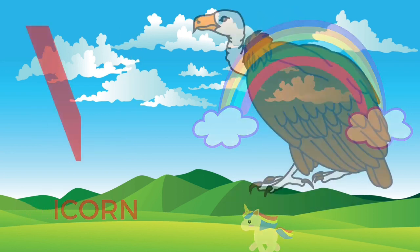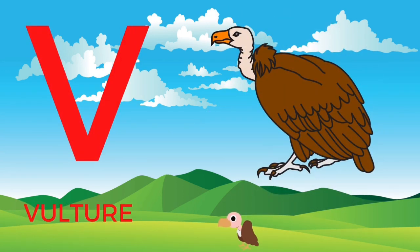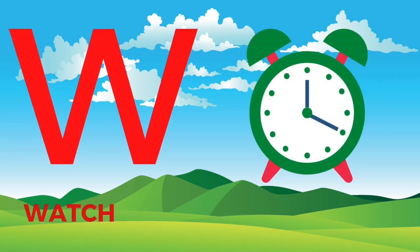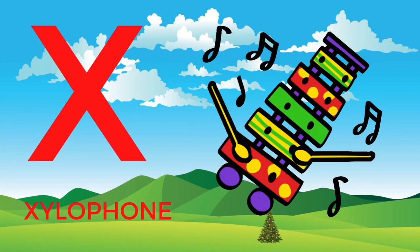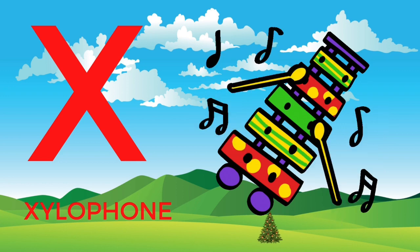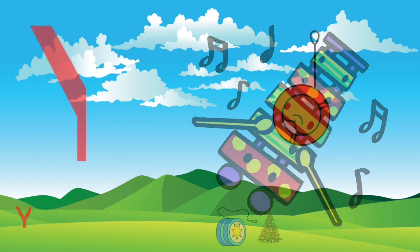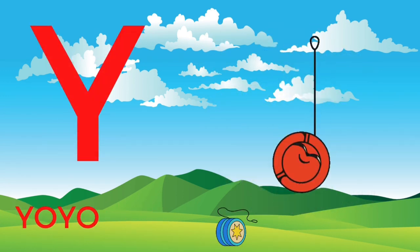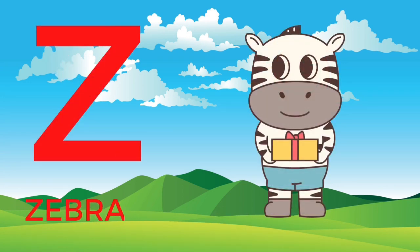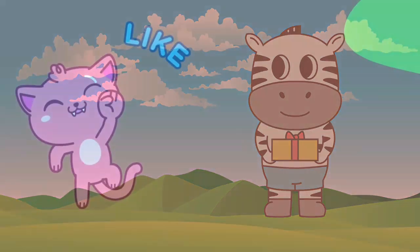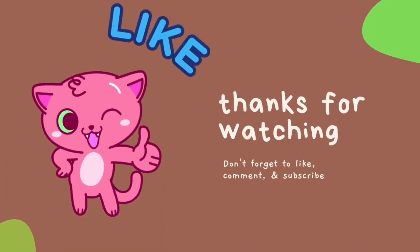V for Vulture. W for Watch. X for Xylophone. Y for Yoyo. Z for Zebra. W, X, Y and Z — now I know my ABCs.